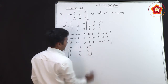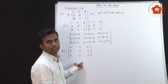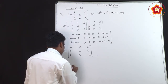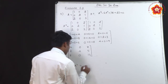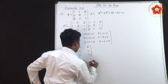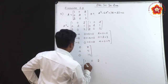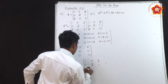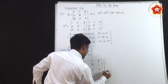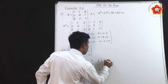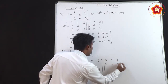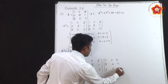Next, we have to find A³. A³ = A × A². A is [1,0,2; 0,2,1; 2,0,3] and A² is [5,0,8; 2,4,5; 8,0,13]. We perform row-by-column multiplication as before.